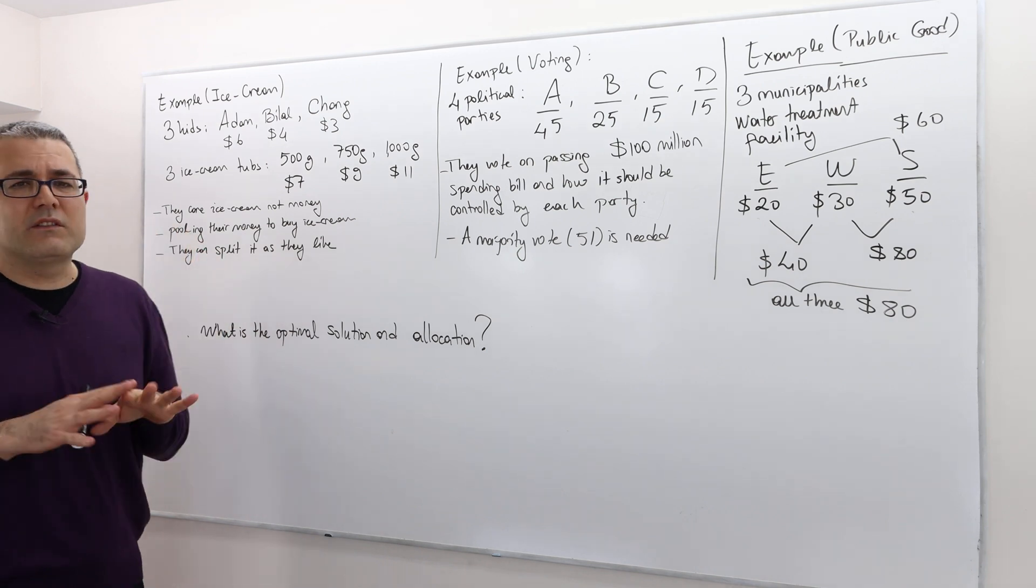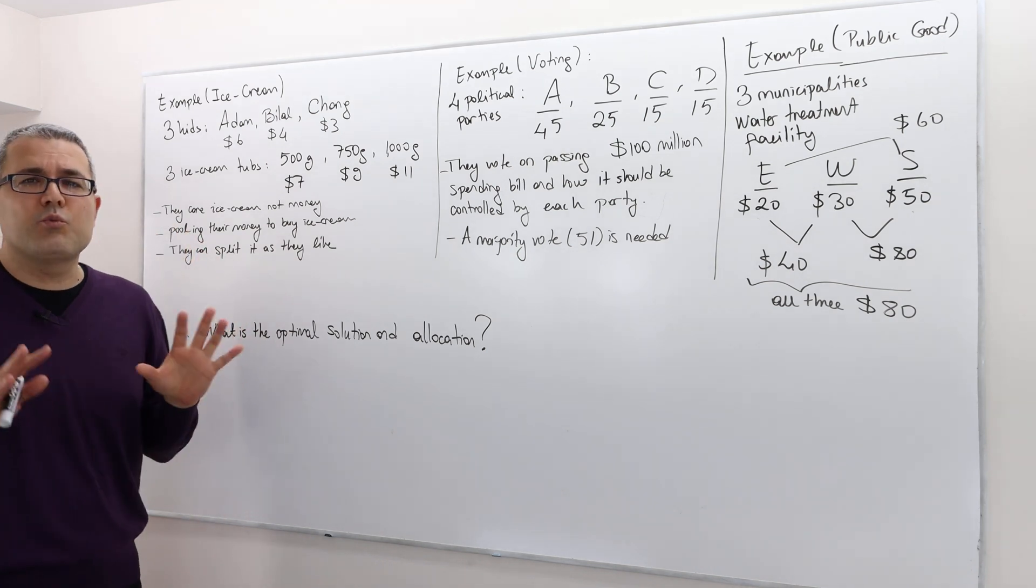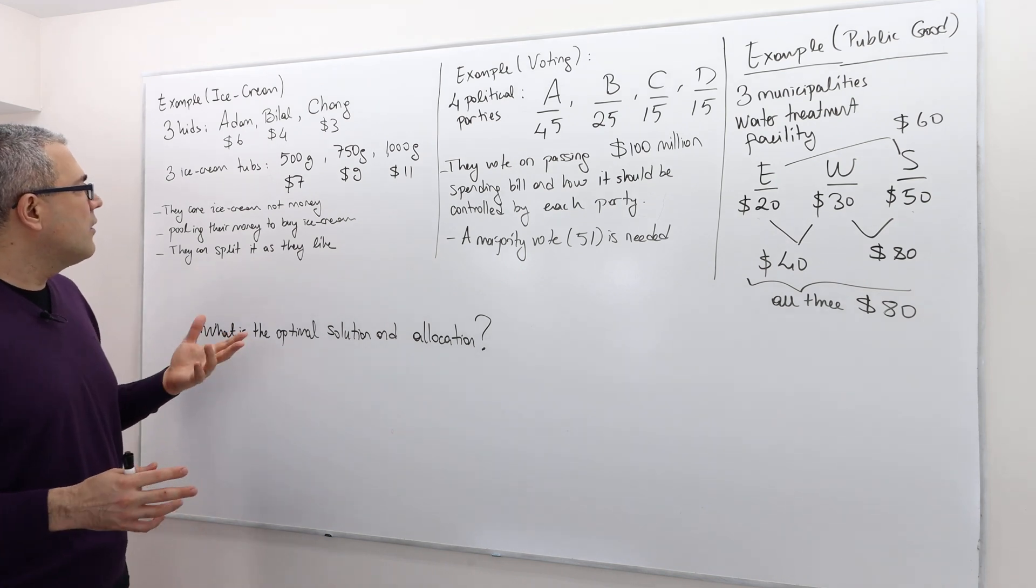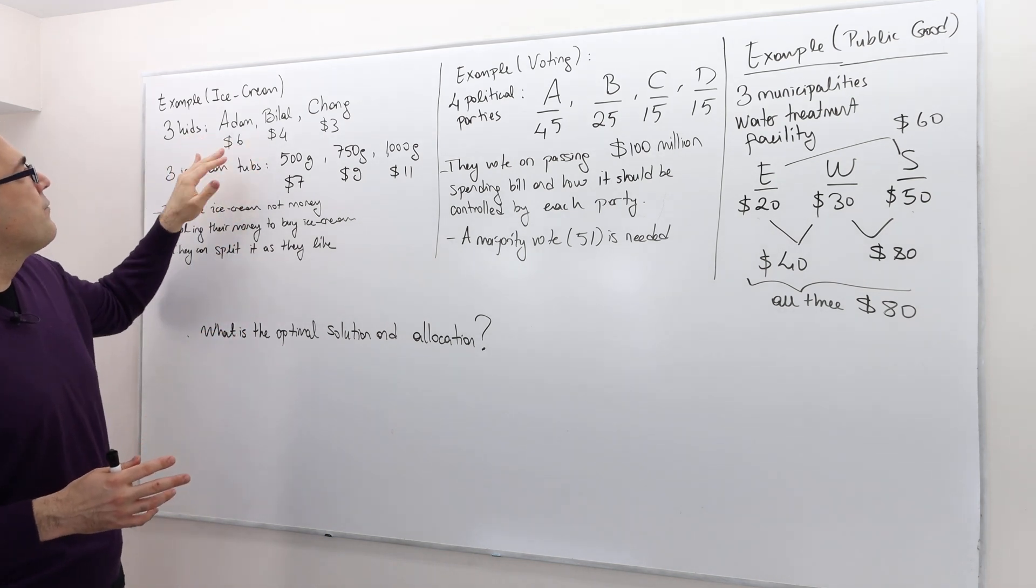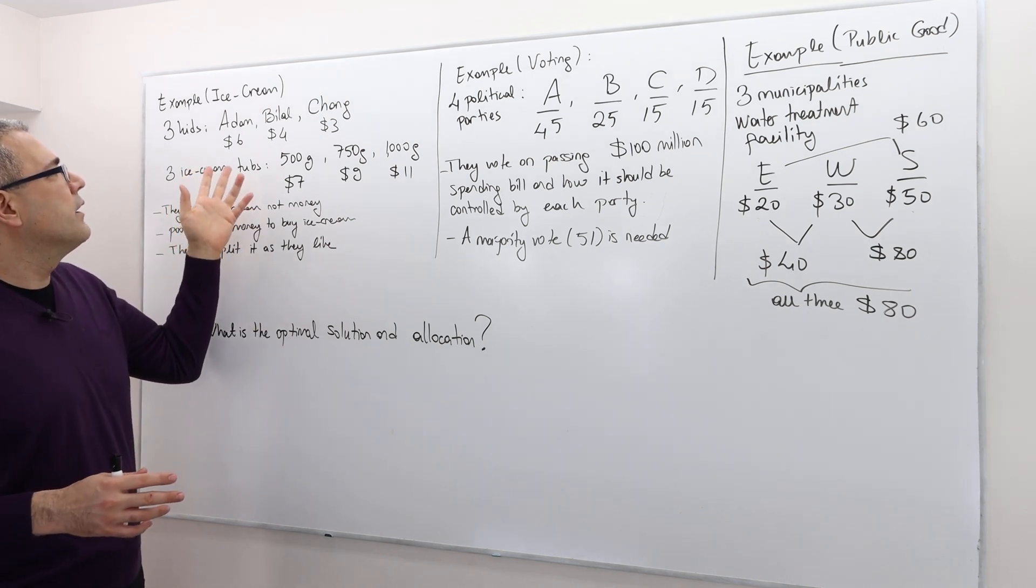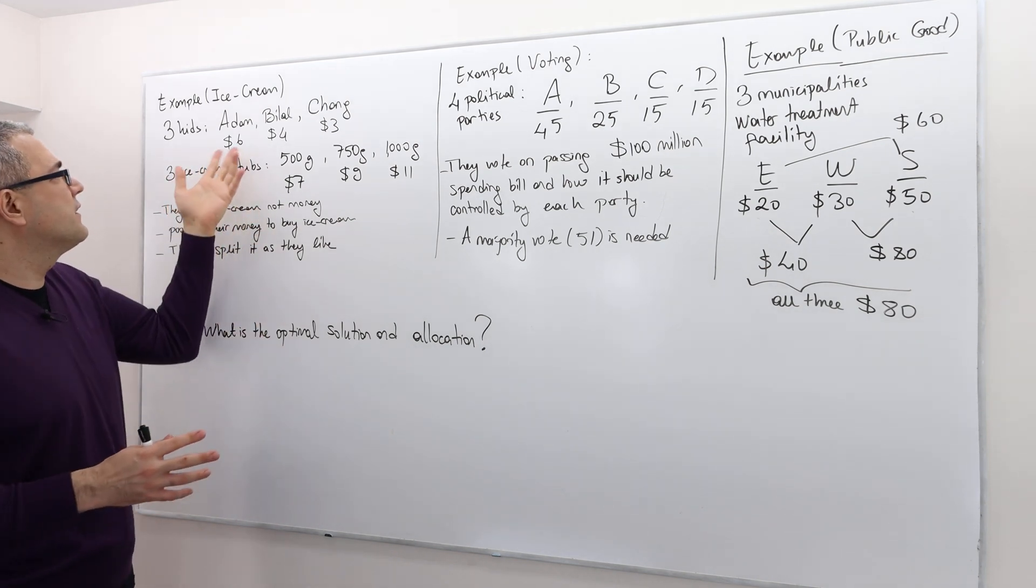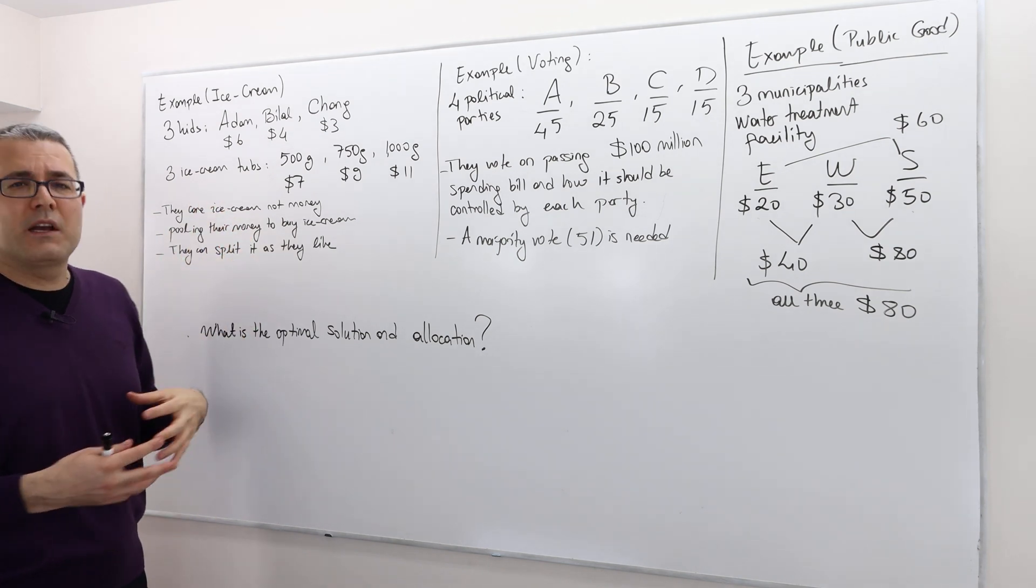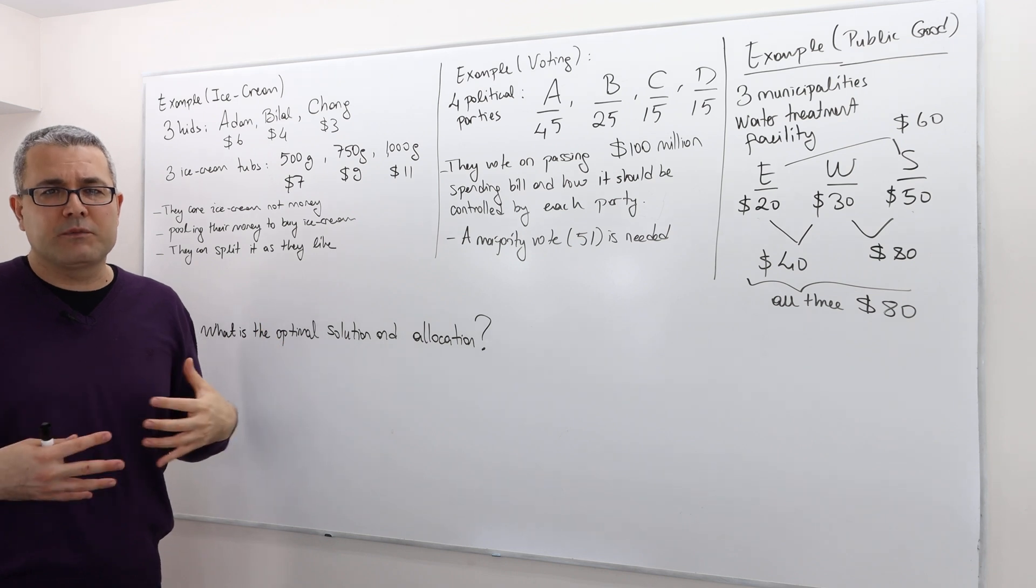All right. As I said, the money is irrelevant for these kids. They just want to consume as much ice cream as they can. Obviously, as you look, nobody can afford to buy any ice cream because nobody has more than seven - six dollars. However, they can pool their resources and buy some ice cream and share among themselves.